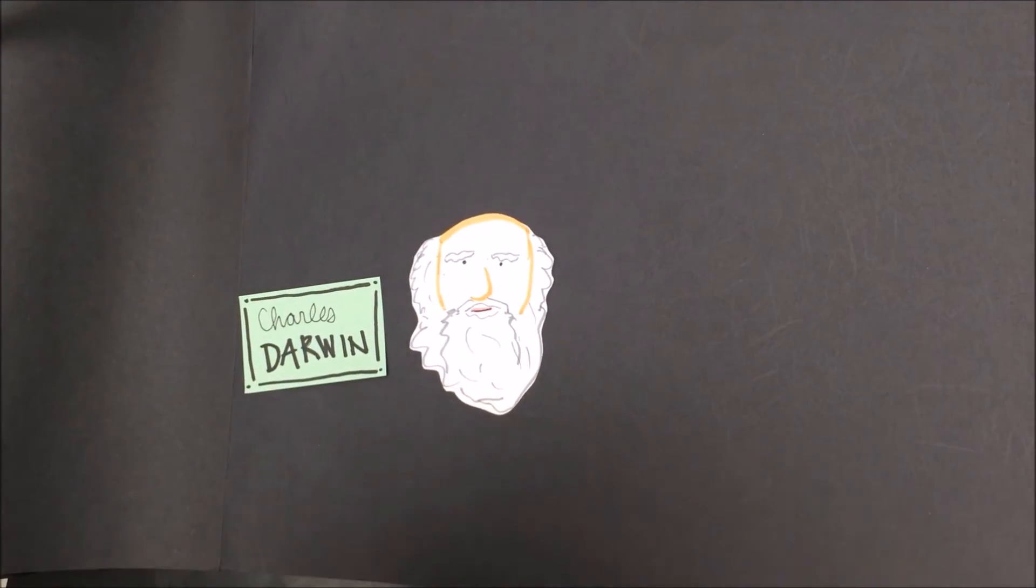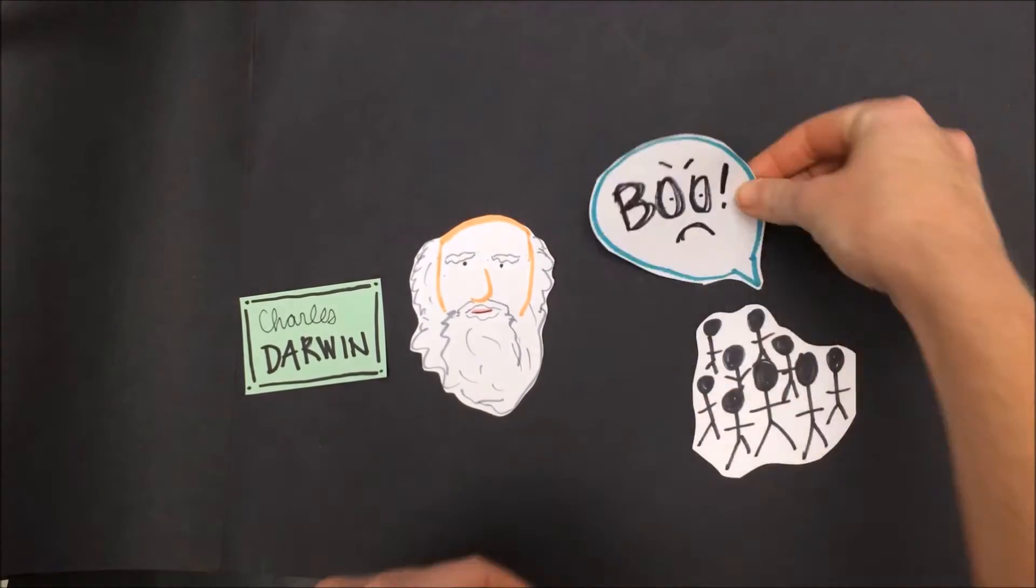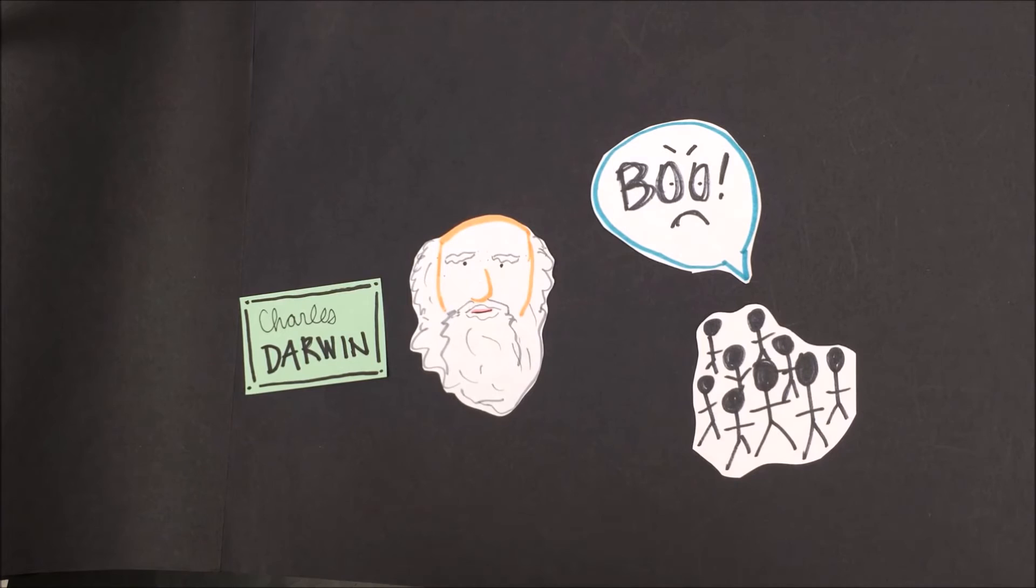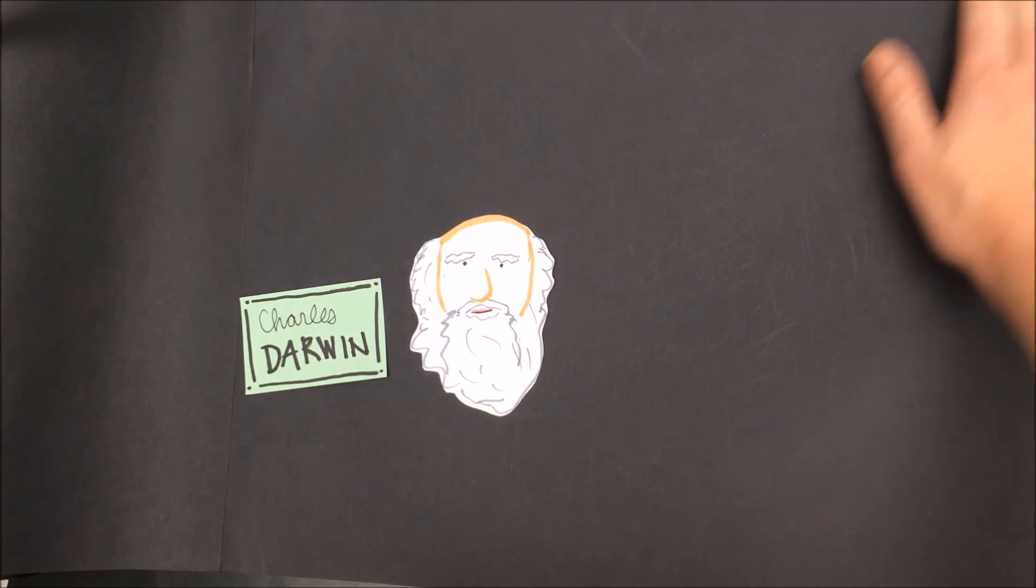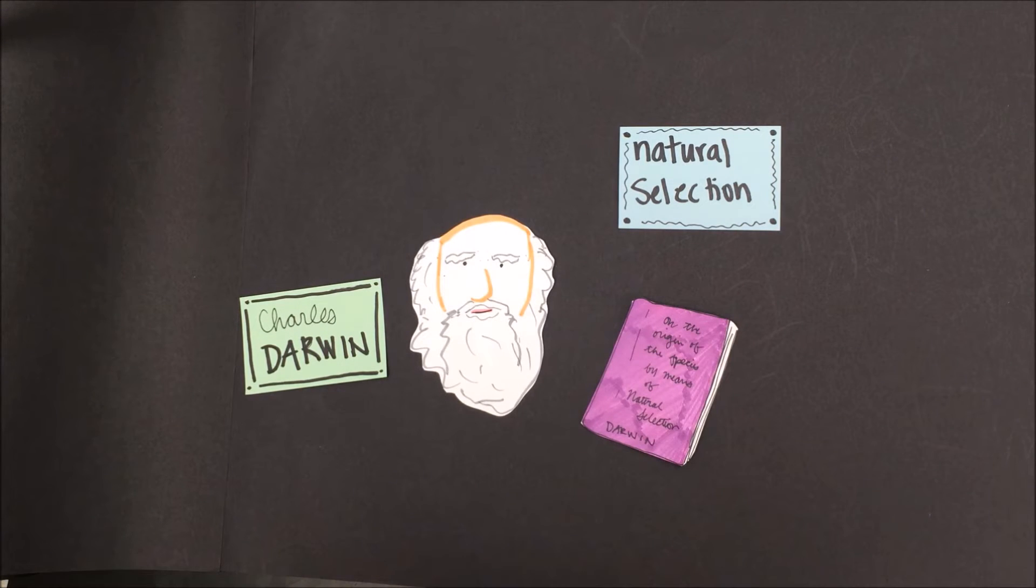So while this all might make sense to us today, it was not very well received in Darwin's time. People were very upset because what Darwin was suggesting went against what they believed. Their beliefs said that the earth was much younger than what Darwin was suggesting. They were upset at Darwin's suggestions that the earth had changed because it was different from what they believed. Today, however, Charles Darwin and his theory of natural selection are what scientists take as the truth. Until this theory is proven incorrect, it is believed to be true.